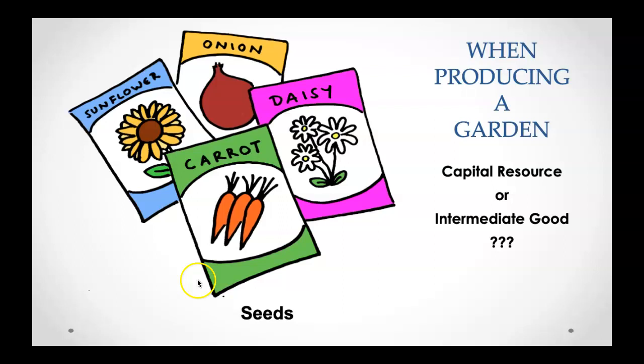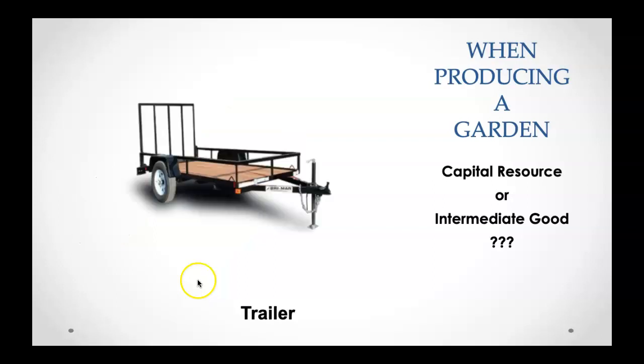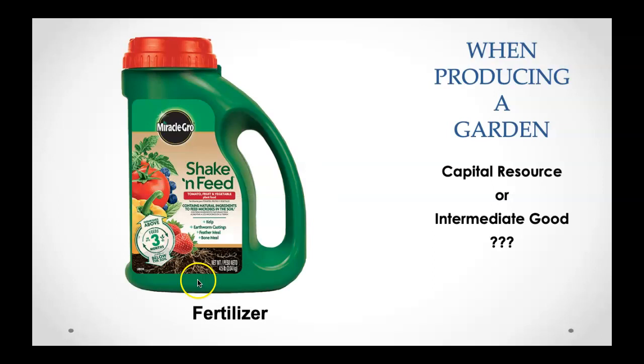Let's do some quizzing before you move on to your worksheet. When producing a garden: are seeds a capital resource or an intermediate good? Is a shovel or trowel a capital resource or an intermediate good? Is the trailer you carry materials on a capital resource or an intermediate good? Is fertilizer a capital resource or an intermediate good?